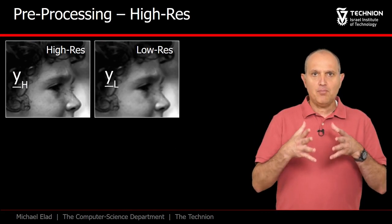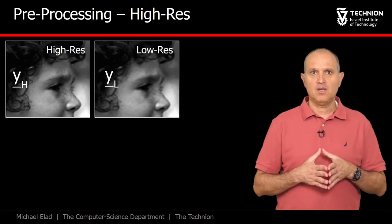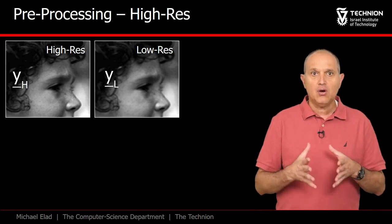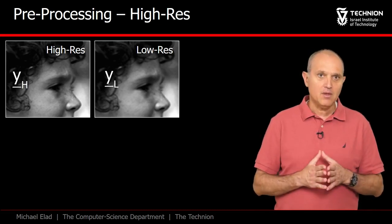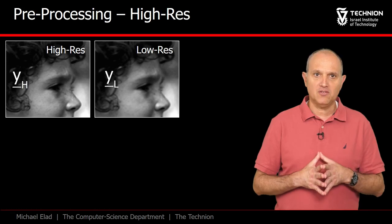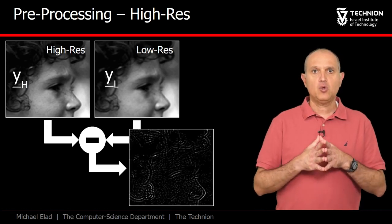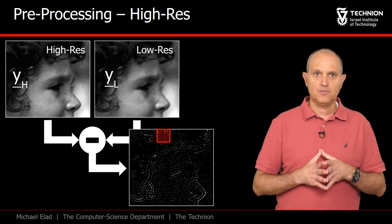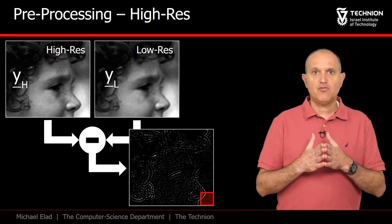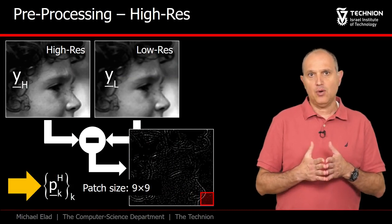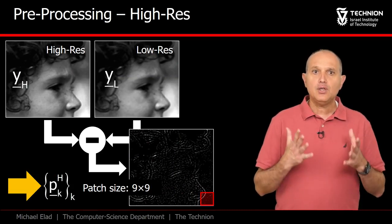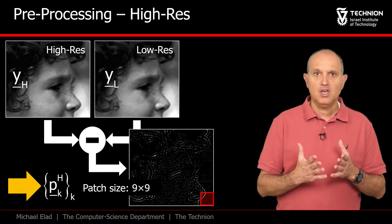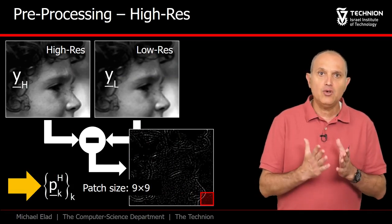Let's talk about the patches we feed to the training process. Given the high and low resolution images, we could train DH on the high resolution patches directly, but this was found to be not so effective. A better approach is to compute this difference and extract the patches from this image, giving us the set of high res information to learn. In this approach, we are essentially saying, let's learn the process of computing the high frequencies of YH since the low ones are already known to us.